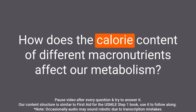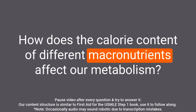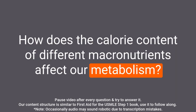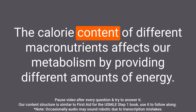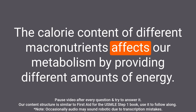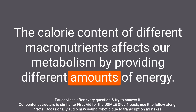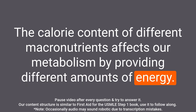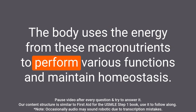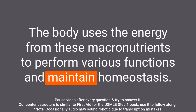Question: How does the calorie content of different macronutrients affect our metabolism? Answer: The calorie content of different macronutrients affects our metabolism by providing different amounts of energy. The body uses the energy from these macronutrients to perform various functions and maintain homeostasis.